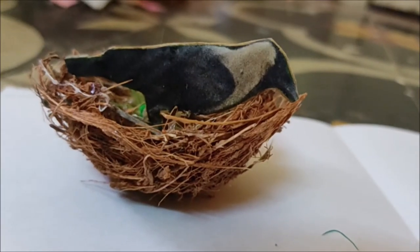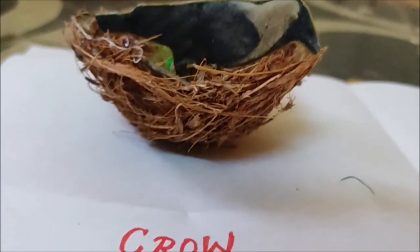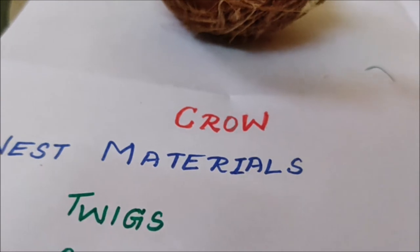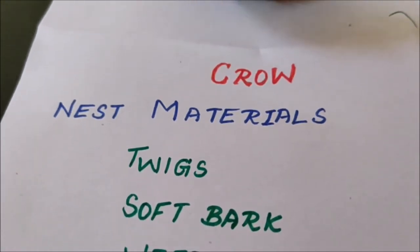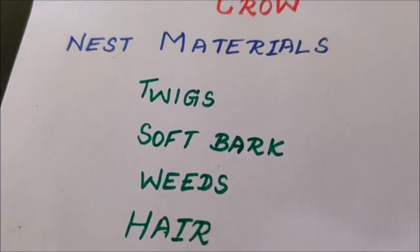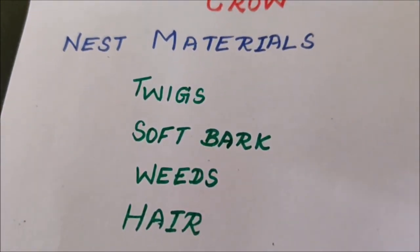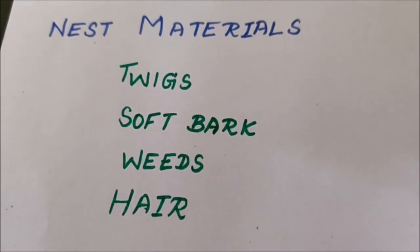Crow. Nest materials: twigs, soft bark, weeds, hair.